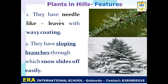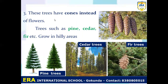The second feature of hill plants is that the branches are sloping. Whatever ice or snow falls on these sloping branches slides down easily. The third feature is that these plants have cones instead of flowers — there are no flowers, and they use cones for reproduction. Examples of plants found in hills include pine trees, cedar trees, and fir trees.